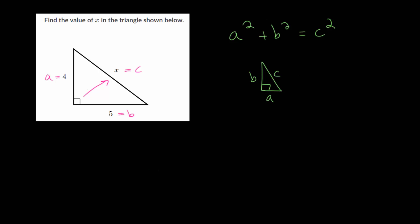So let's just plug everything into the formula now. So we have that a squared, so that's 4 squared, plus b squared, so 5 squared, is equal to c squared, and we call it x c.